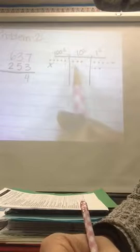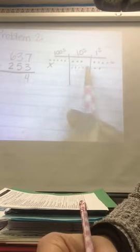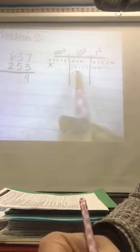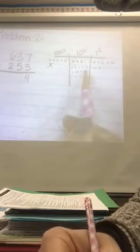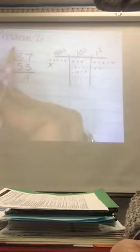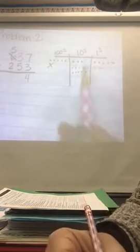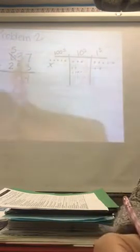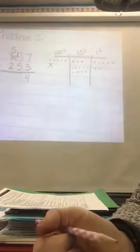So I'm going to unbundle 100 and rename those as 10s. So 10, 20, 30, 40, 50, 60, 70, 80, 90, 100. And now I don't have 600s anymore. I only have 5. And I also don't have just 3 10s. I now have 13 10s.